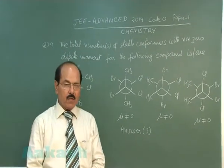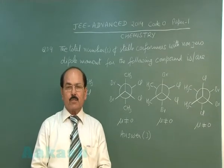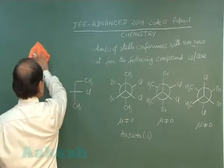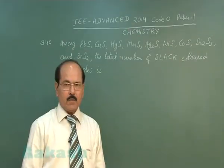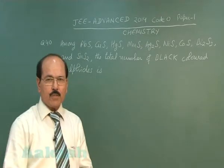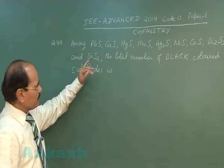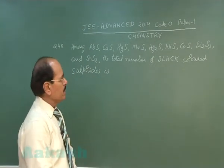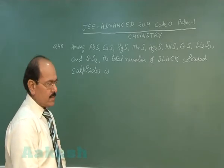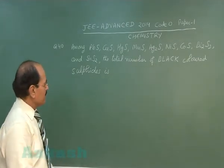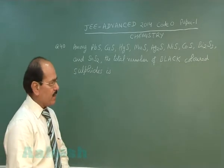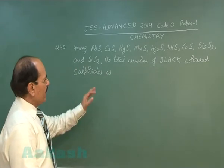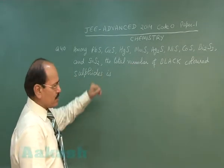Now we move on to the last question of the paper, that is question number 40. Question number 40 reads: among PbS, CuS, HgS, MnS, Ag2S, NiS, CoS, Bi2S3, and SnS2, the total number of black colored sulfides is — out of the given sulfides, except MnS and SnS2, all the rest are black colored.